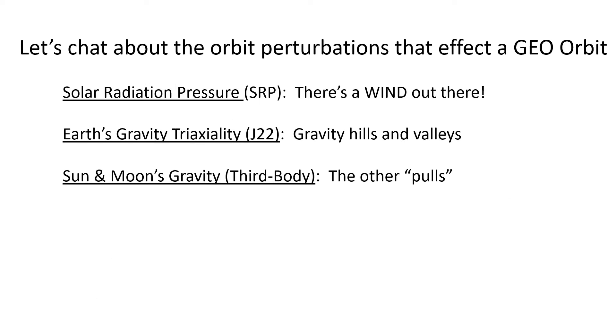So the big three orbit perturbations. The dominant one is solar radiation pressure — there's a wind out there, the solar wind, and it does affect the orbit. The Earth's gravity has some odd effects when you're looking at it from geo — that's called triaxiality, the J22 effect. And then there's the sun and the moon tugging on us with their gravity.